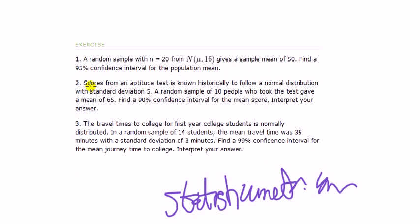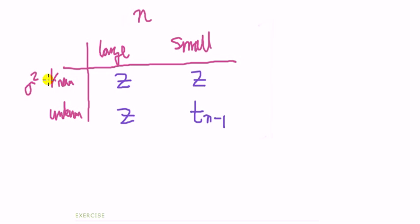Second question. Scores from an aptitude test is known historically to follow a normal distribution with standard deviation of 5. Okay, find a confidence interval for the mean score. Now, is the data normally distributed? Yes, we told that. This variance, is the population variance known? Well, here we've just told with a standard deviation of 5. How do we know whether that's corresponding to the population or the sample? Well, we get the answer by looking at this phrase here. The test is known historically. Now, when it says known historically, that basically tells you it's the population. So, we are told what the population standard deviation is. So, we must know what the population variance is. It will be 25.